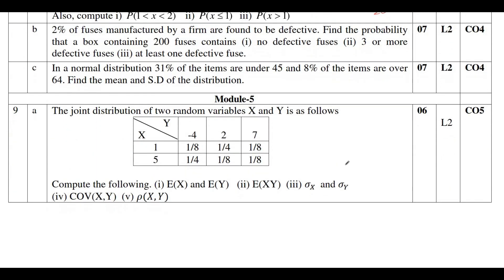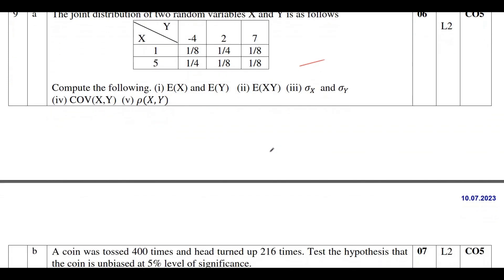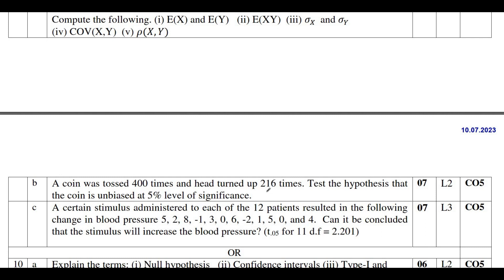Moving on to Module 5 — if you study very well in Module 5, you can score 20 out of 20. It is a very simple module. Study joint probability distribution — they will ask expectation of x, expectation of xy, covariance of x and y, and correlation of x and y. Then study hypothesis testing and chi-square. If you study these three topics, you can score 20 out of 20, or a minimum of 14 marks from this module.